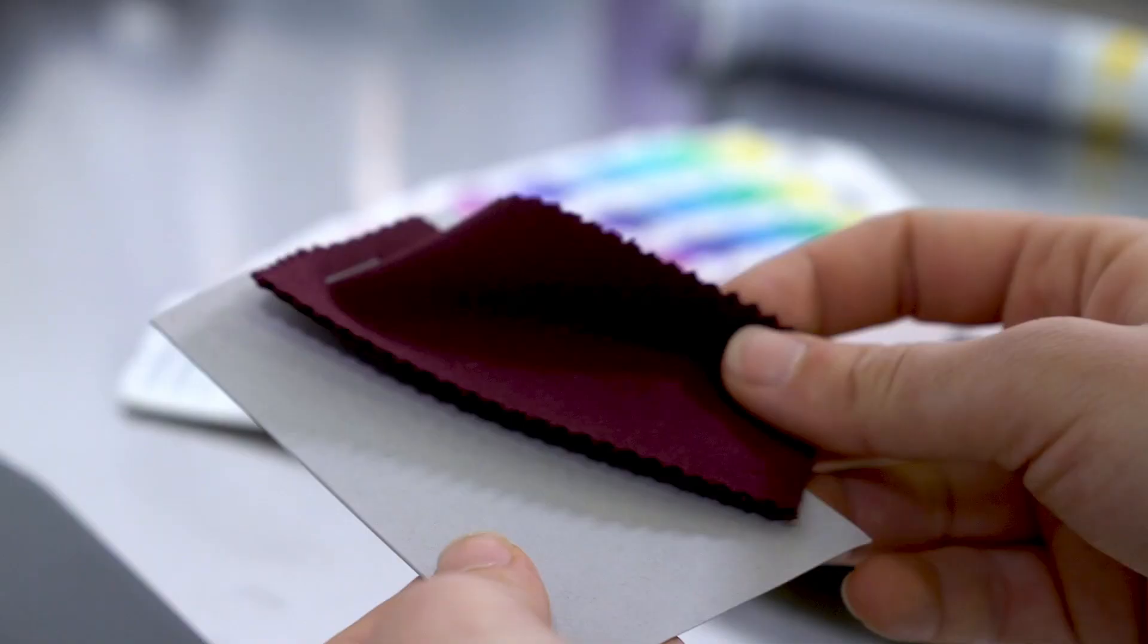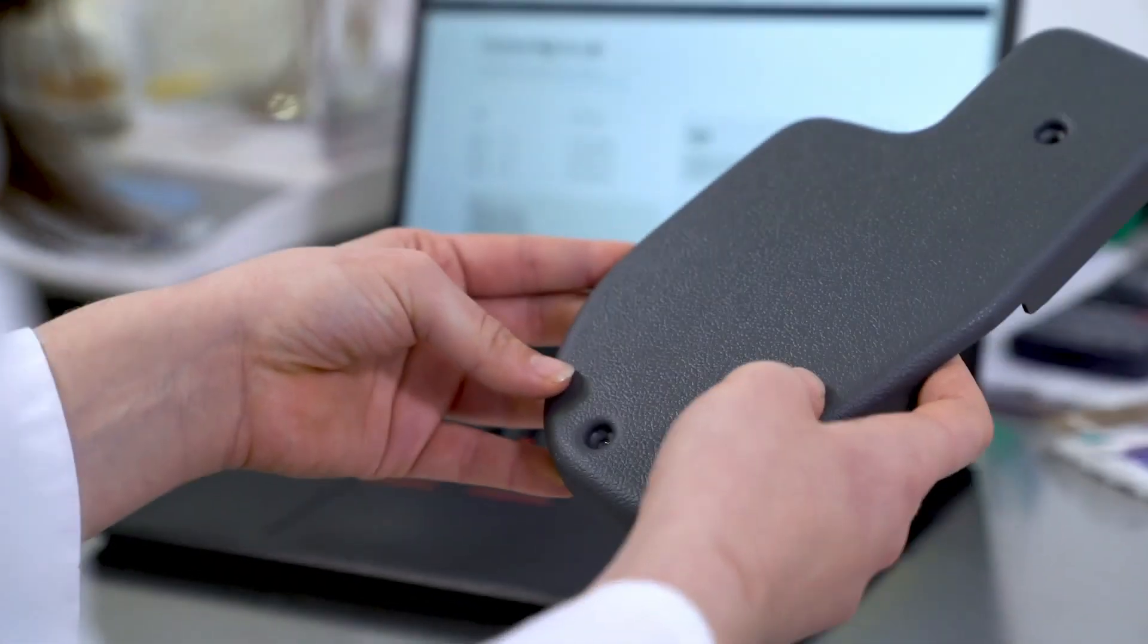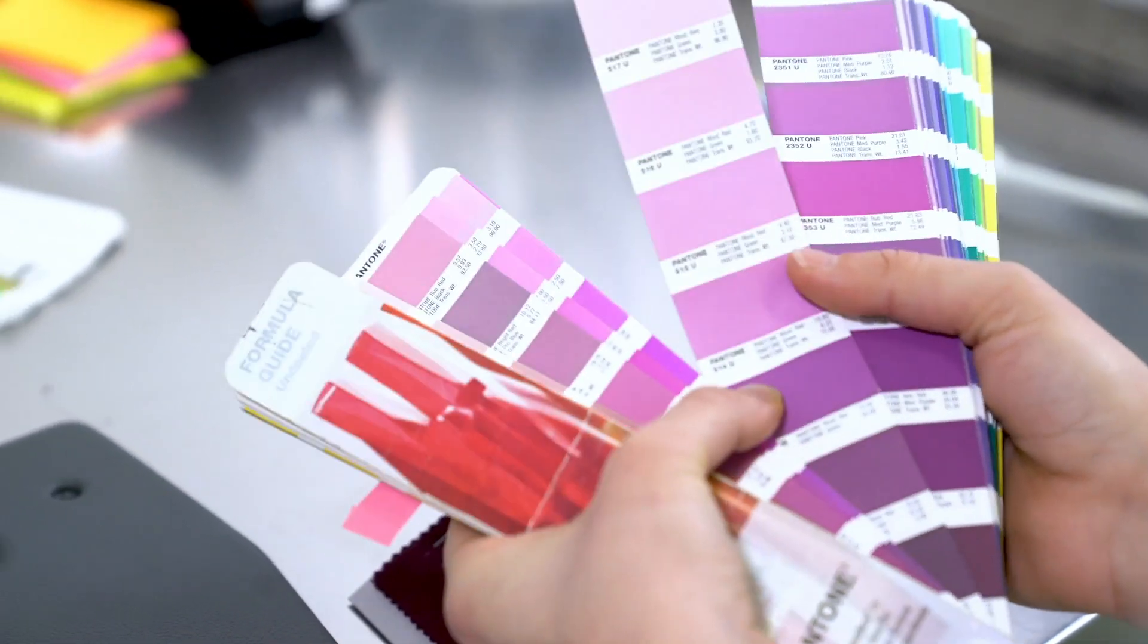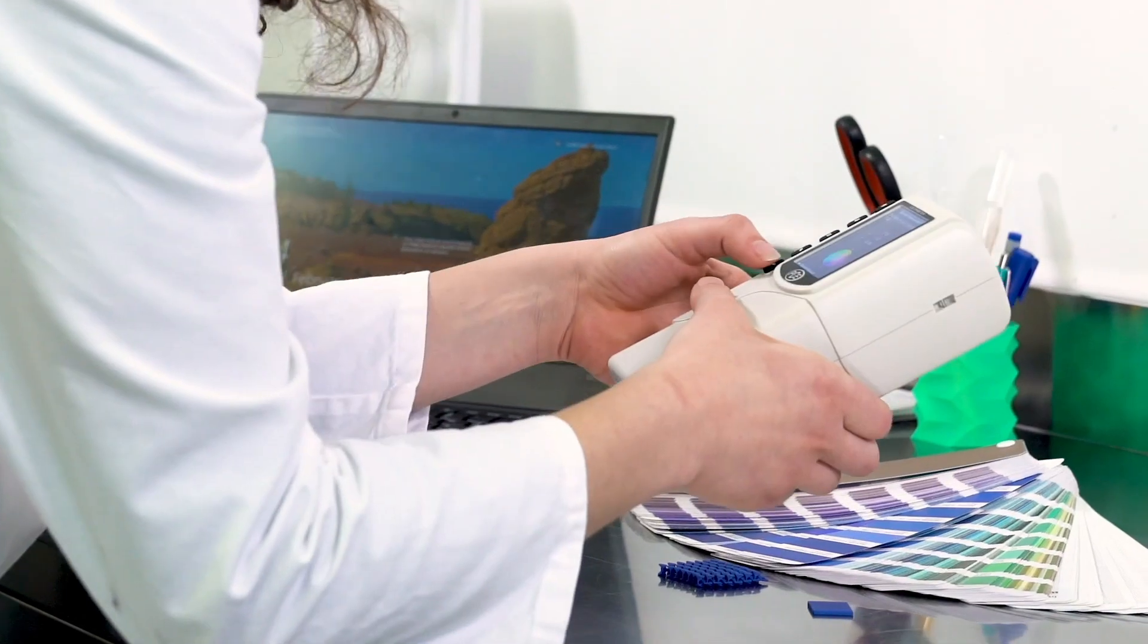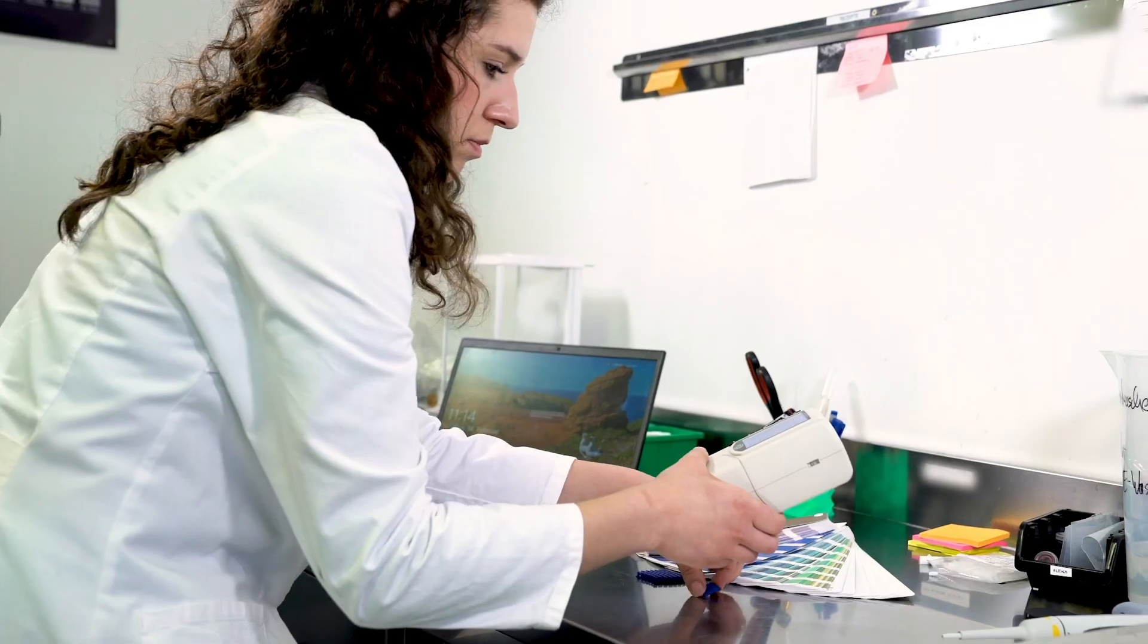Therefore, a physical sample, which can be fabrics, plastics or paper, must be provided. Even human skin can be read in. Alternatively, a reference like a color code, for example Pantone or RAL, can be chosen.